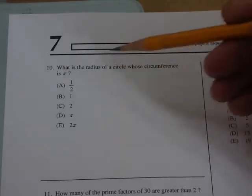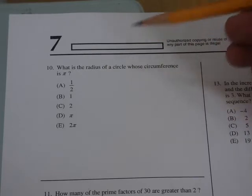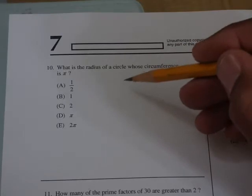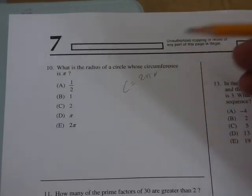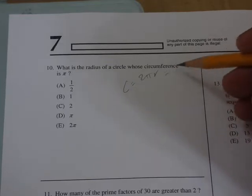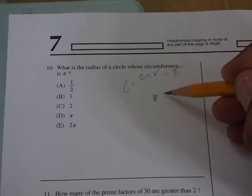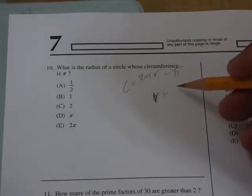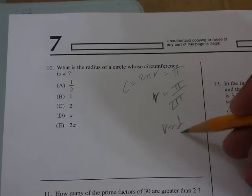The first one here is what is the radius of a circle whose circumference is π? This is a pretty straightforward one. We know that the circumference is 2πr, so if the circumference is π, then that means that r is basically divide this by 2π and you're left with 1/2.